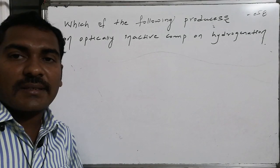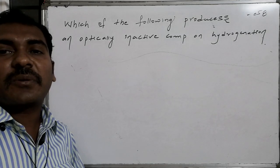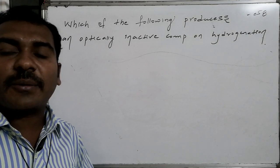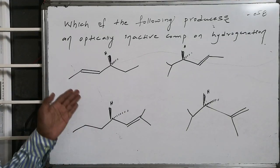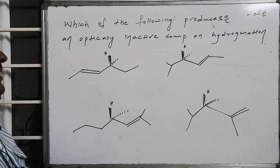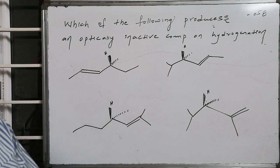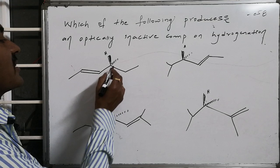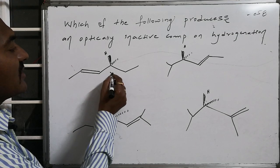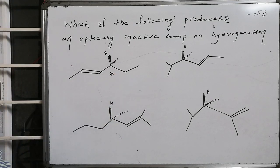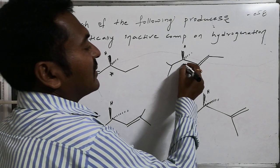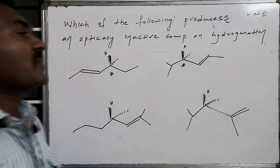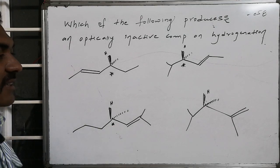Which of the following produces an optically inactive compound on hydrogenation? The reactants are given as alkene systems. This particular carbon in the first compound is chiral because it is connected with different groups: one methyl, one hydrogen, one ethyl, and one unsaturated system. The starting material is chiral, as different groups are present.